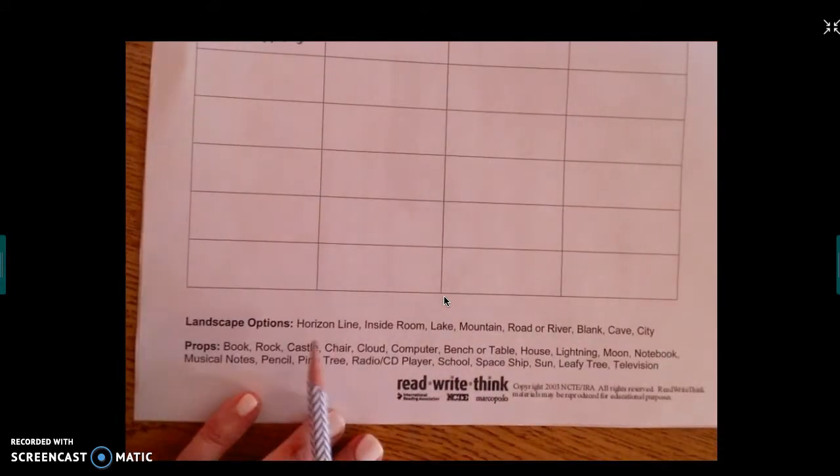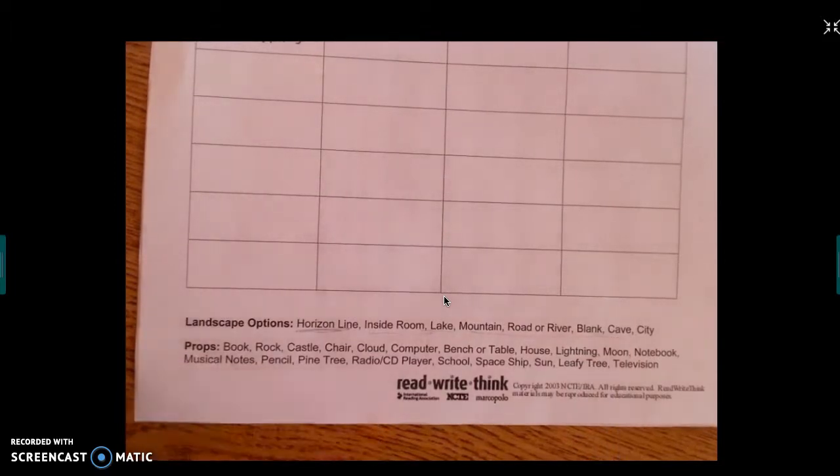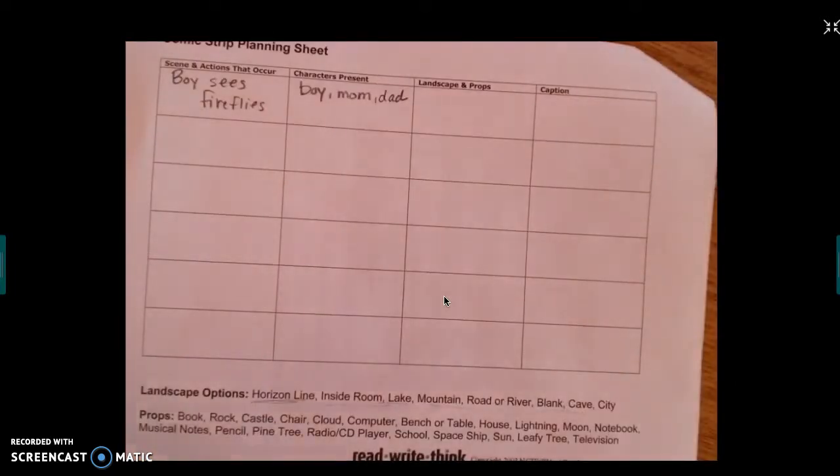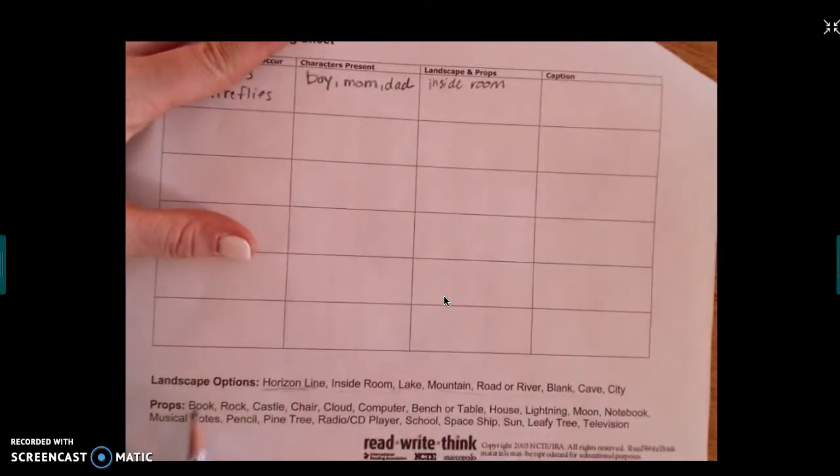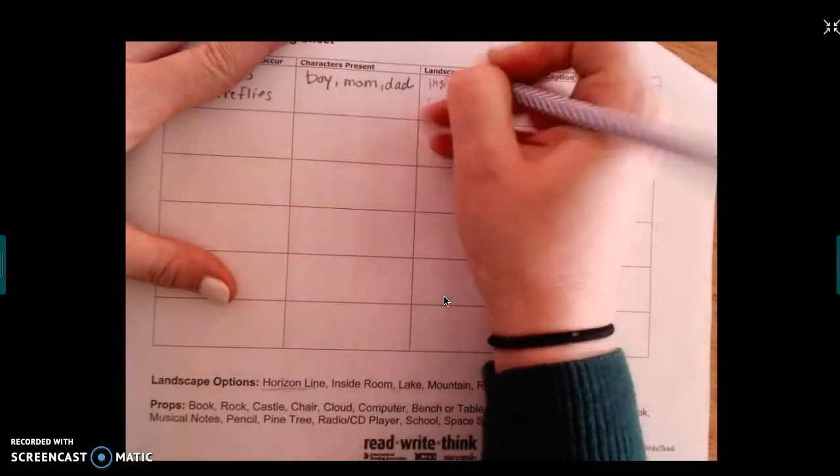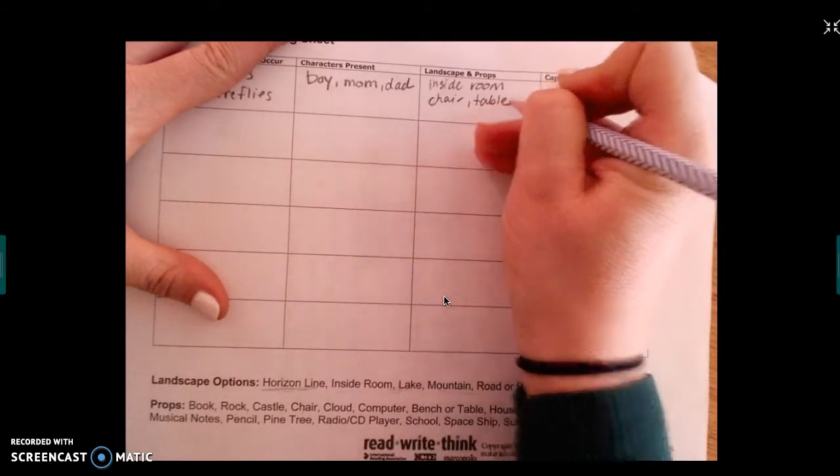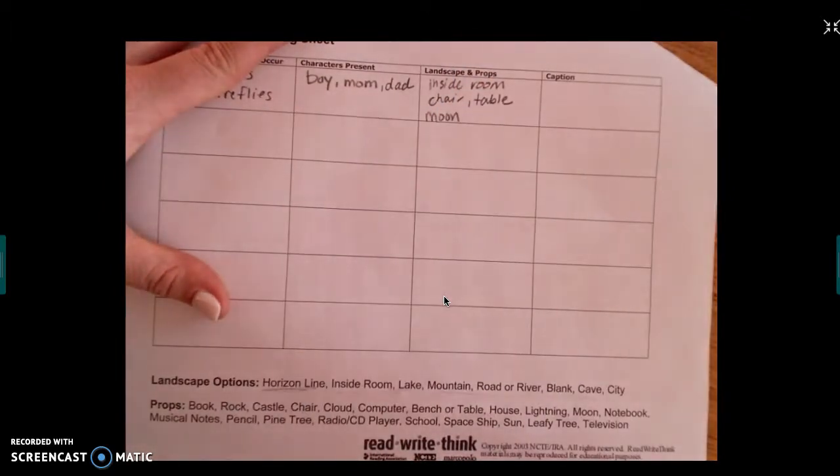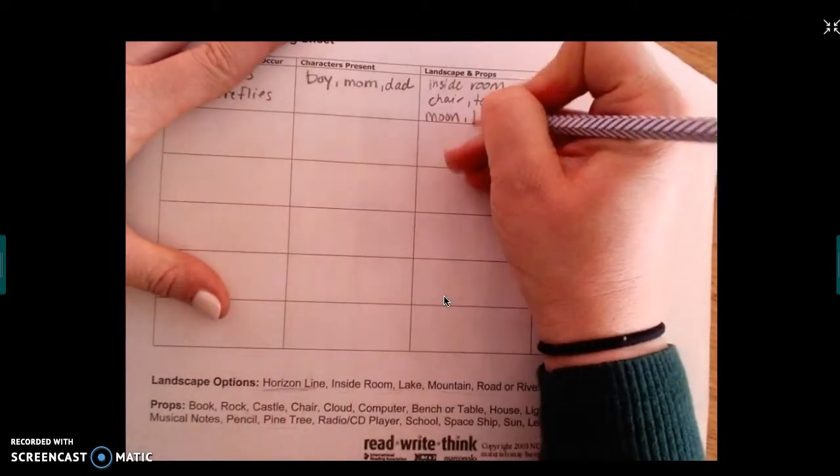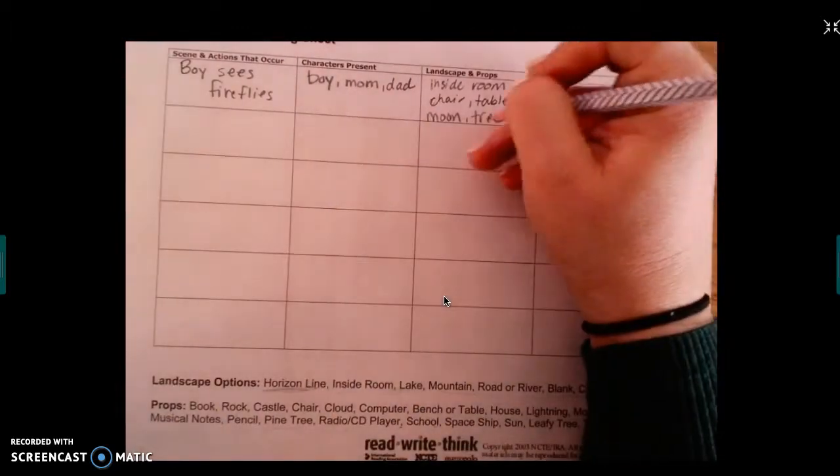And then the landscape and props. So what I want you to see is that you can pick a landscape here. So you're on a line, inside a room, lake, mountain, road, river, blank, cave, or city. So for mine he is obviously inside a room looking out a window. I'm not going to be able to find the perfect one but I'm going to use inside a room. And then for the props I have a book, rock, castle, chair. So I could possibly use a chair because he's sitting in a chair. I could use a table. I could use a moon because it's at night. I could use a pine tree. So I'm thinking of all the things that could be in my scene.